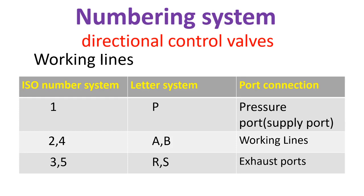For number 2 and 4, or A or B, that is working lines. For number 3 and 5, or R and S, that is exhaust ports.